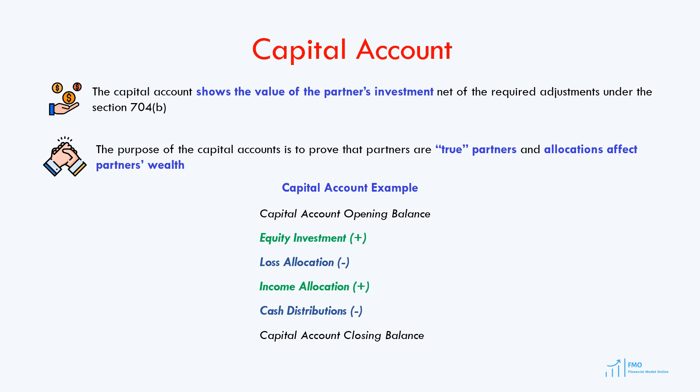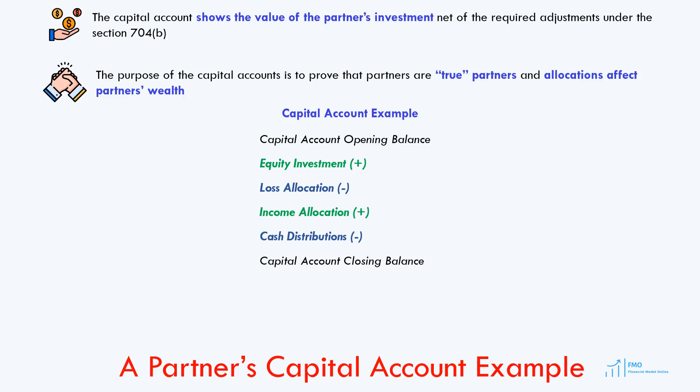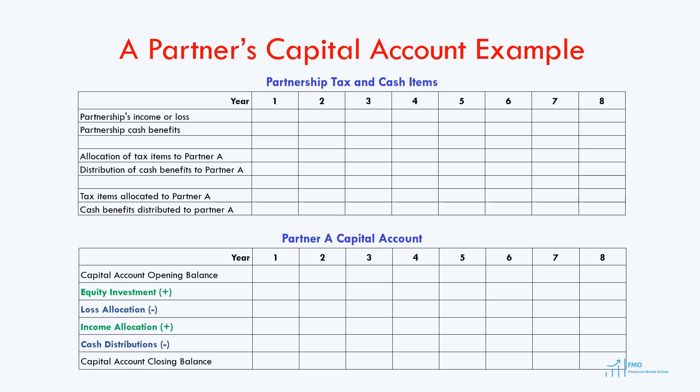Having been introduced to capital accounts, let's review a numeric example of a hypothetical partnership. We will assume the project's life is 8 years. In year 1, we will be building the project, and from year 2, the project will be generating losses, income, and cash flow. From year 2 to year 4, the project will be generating losses of 60, and from year 5 to year 8, the project will be generating income of 55.